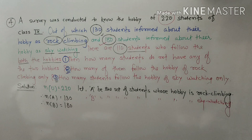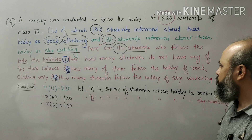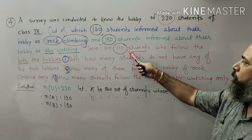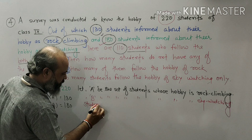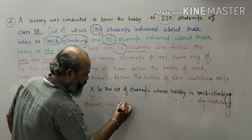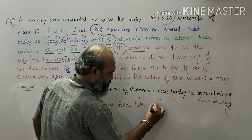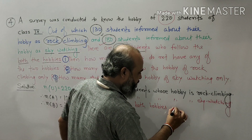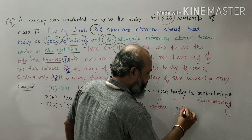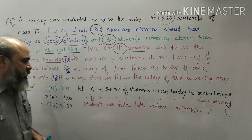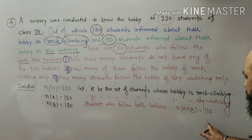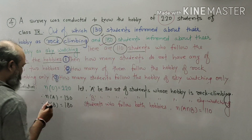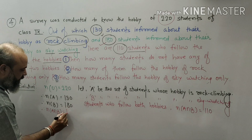There are 110 students whose hobby is both sky watching and rock climbing. So these students follow both hobbies. Number of A intersection B is 110.